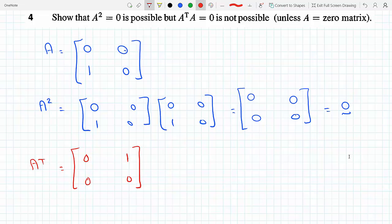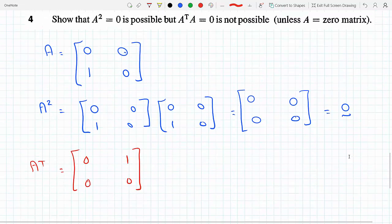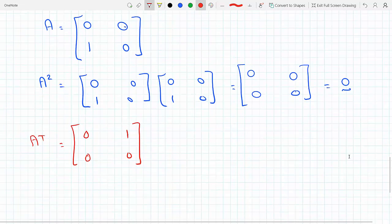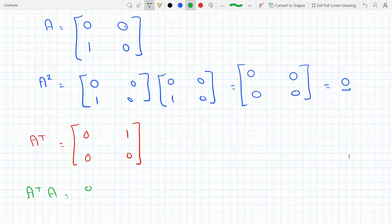Let's multiply A^T times A. If I do A^T times A here in green, that's [[0,1],[0,0]] times [[0,0],[1,0]].